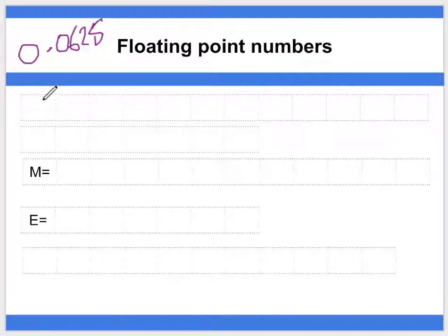Okay, so 0.0625, if we write this out, I'm just going to put a few zeros in front of it, and it's going to be half, quarter, eighth, and sixteenth. And we want this to be normalized,